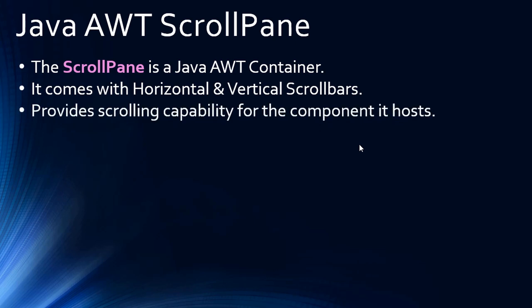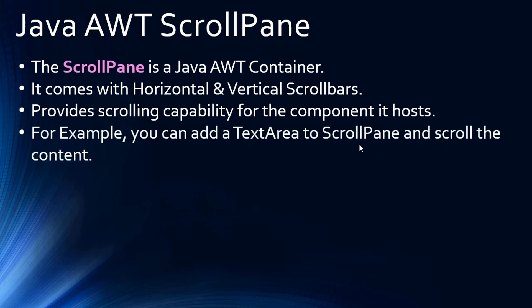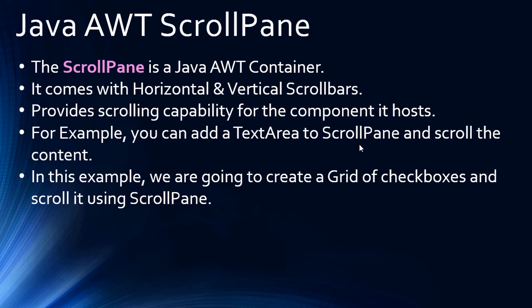The AWT ScrollPane provides scrolling capability for the component it hosts. For example, you can add a text area to a ScrollPane and scroll the content of that text area. Once you enable horizontal and vertical scroll bar capability, you can scroll the content in both directions. In this example, we are going to create a grid of checkboxes and scroll that grid using the ScrollPane.